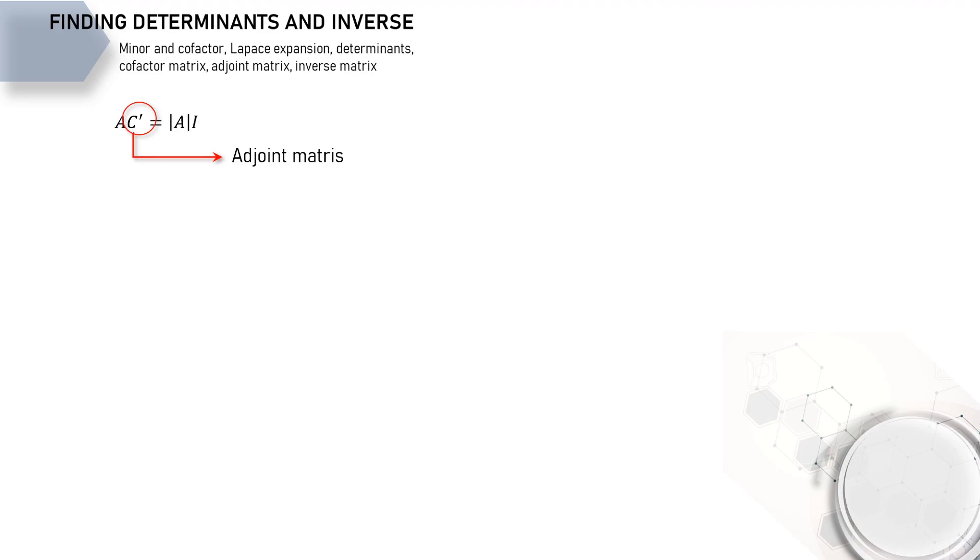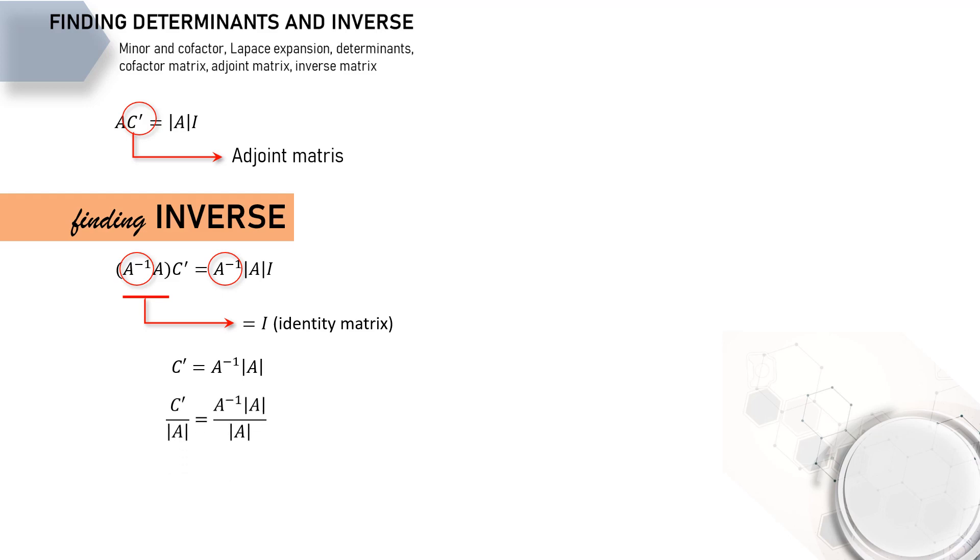To find the inverse matrix, we first multiply both sides of the equation with the inverse matrix like this. Then remember what makes matrix inverse unique. Multiplication of matrix with its inverse will always result in identity matrix. So, this equation will become like this. Since the determinant is a scalar number, both sides of the equation can be divided with the determinant like this. The result is the formula for finding an inverse matrix.